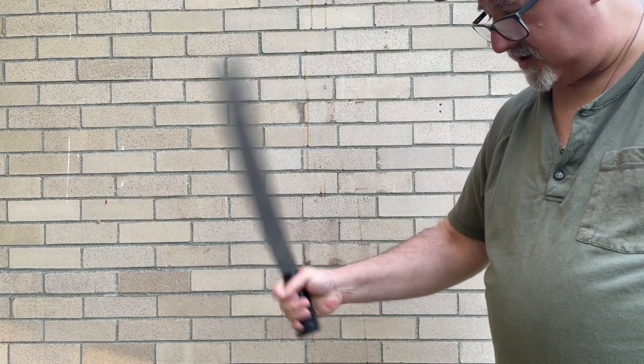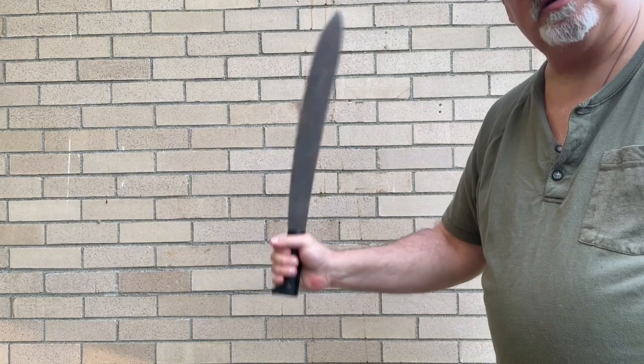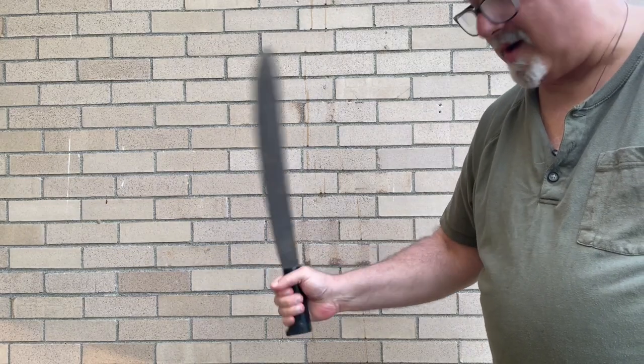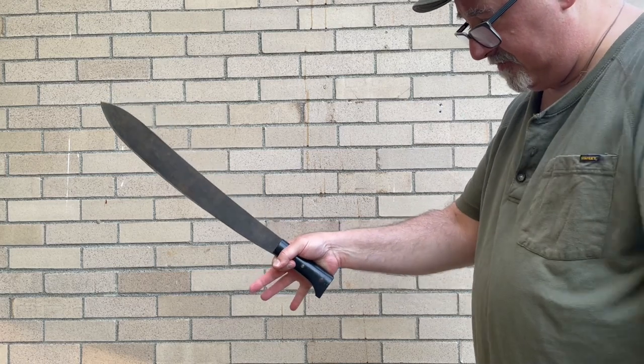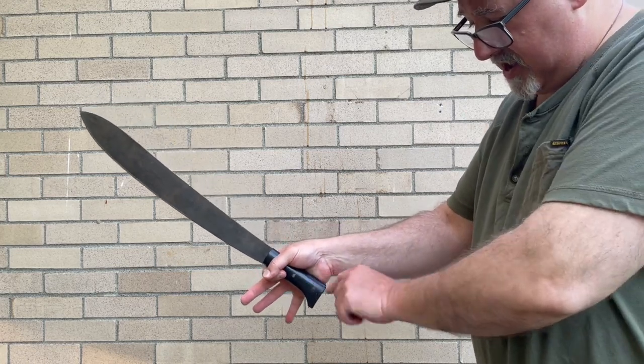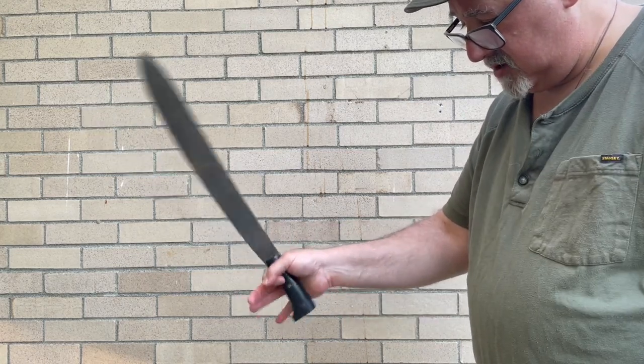You're letting just the mechanics of the grip stop the weight of the weapon. Essentially you're pivoting on these two fingers, and the butt of the handle is stopping against the meat of your palm there.